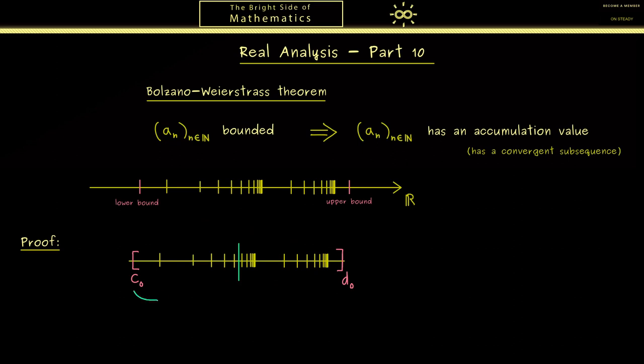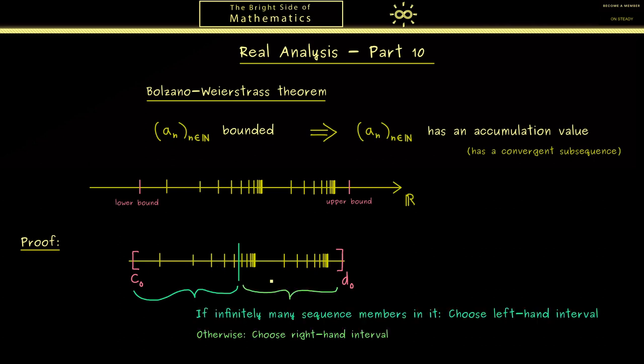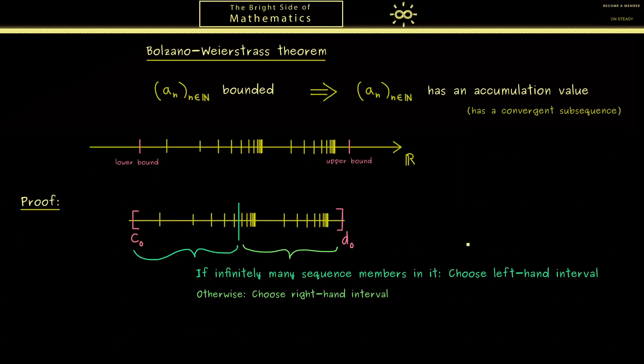Therefore the procedure is that we first look at the left interval and observe if we have infinitely many sequence members in it. Of course it could happen that both intervals have infinitely many members in it, but then we would choose the left hand side. Okay, so what we get is a new interval that has half the length of the one before.